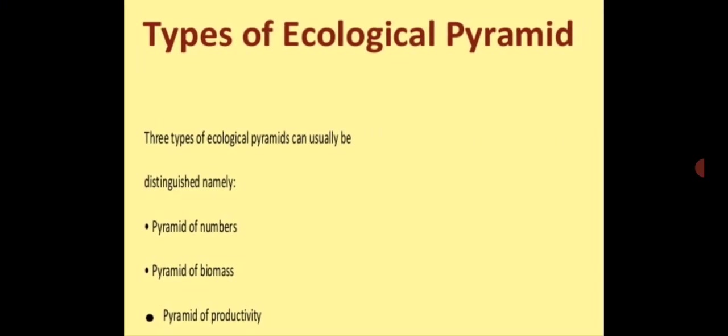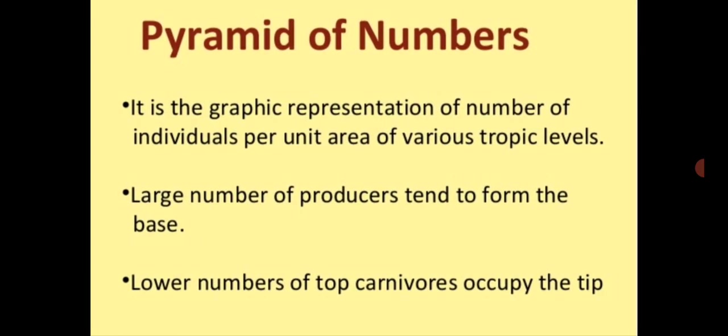There are three types of ecological pyramids which we can talk about: pyramid of numbers, pyramid of biomass, and pyramid of productivity. In the pyramid of numbers, it is the graphic representation of number of individuals per unit area of various trophic levels.